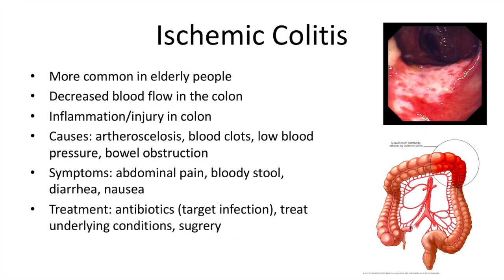I would like to highlight ischemic colitis, which affects the colon usually in older people. This disease is characterized by inflammation or injury of the colon as a result of decreased blood flow in the associated vasculature. This can be caused by atherosclerosis, blood clots, low blood pressure, or bowel obstruction. The symptoms of ischemic colitis include abdominal pain, blood in the stool, diarrhea, or nausea.